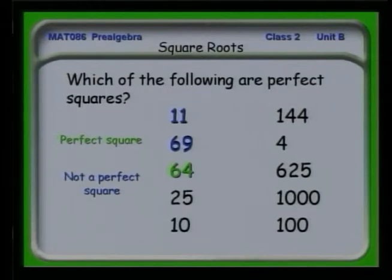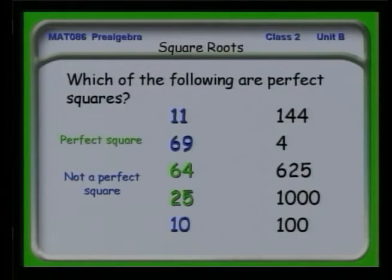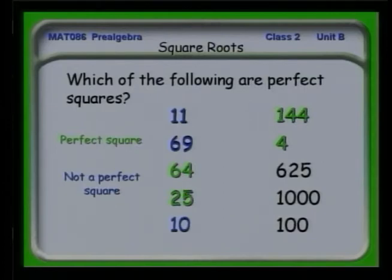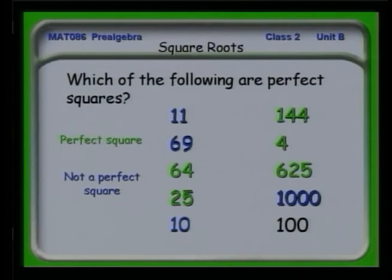25? It turns green — 5 times 5. What about 10? No — 3 times 3 is 9, 4 times 4 is 16, so 10 is not among our perfect squares. 144 — we talked about this earlier — that is 12 times 12. 4 is an easy one: 2 times 2. Here's one you might not have run into: 625. That is a perfect square — it turns out it's 25 times 25. What about 1,000? No whole number times itself is 1,000, so it's not a perfect square. And 100: 10 times 10 — that is a perfect square. Were you able to follow along?